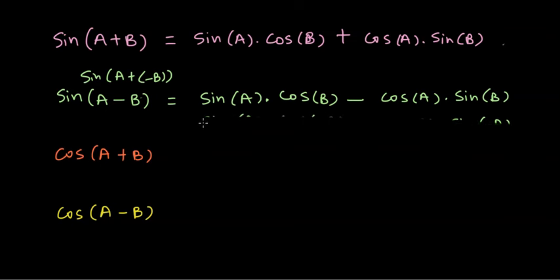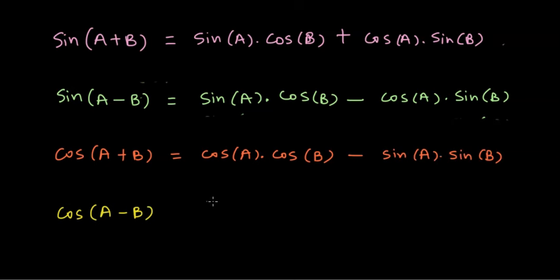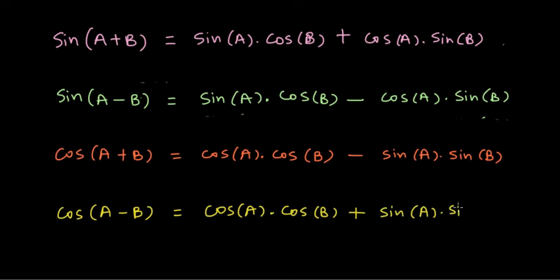For cos(A + B): both cosines and sines appear together in multiplication. cos(A + B) = cos(A)cos(B) − sin(A)sin(B). And for cos(A − B), the sign turns into plus: cos(A)cos(B) + sin(A)sin(B). That's how these formulas can be remembered.